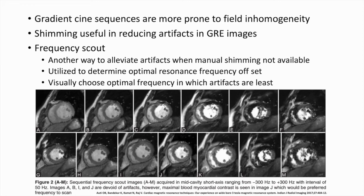Frequency scout is another way to alleviate artifacts when manual shimming options are not available. It is utilized to determine the optimal resonance frequency offset, and the optimal frequency is visually chosen in which the artifacts are least. Multiple short axis gradient images are taken with different frequency offsets, and the image with the least artifact and the maximum contrast is chosen for further imaging. In this example, image J has the least artifacts and most contrast.